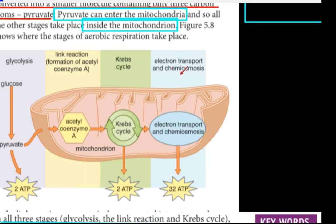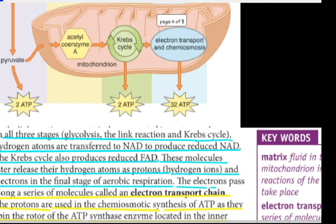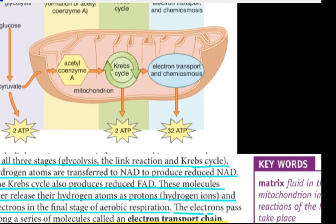So glycolysis is a cytoplasmic process. The link reaction, Krebs cycle, electron transport chain and chemiosmosis take place in the mitochondria. Hydrogen atoms are transferred to NAD to produce reduced NAD.